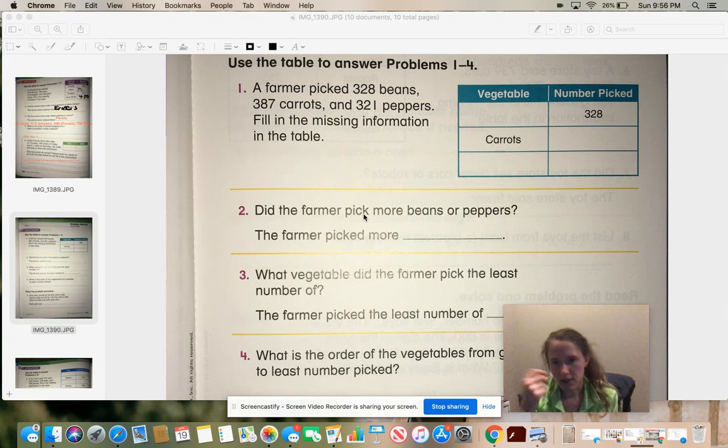Now, we already know how to make tables, so this should actually be pretty simple for you guys. So the first thing it says is a farmer picked 328 beans, 387 carrots, and 321 peppers. Fill in the missing information in the table.